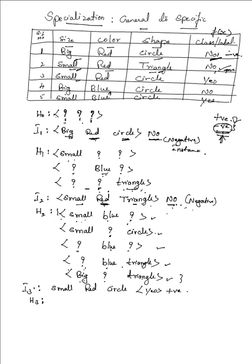To generate H3, we check each hypothesis in H2 against I3 (small, red, circle). The first hypothesis (small, blue, ?): I3 has red but the hypothesis specifies blue, so it is inconsistent and cannot be selected. The second hypothesis (small, ?, circle): I3 has small — matches; color is question mark — any; circle — matches. So this is a consistent hypothesis and I copy it: (small, ?, circle).